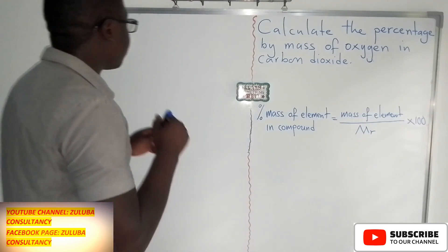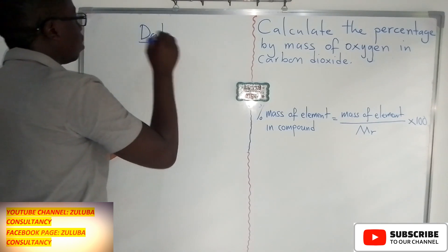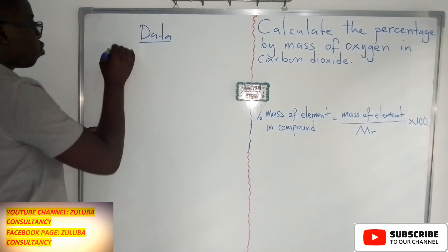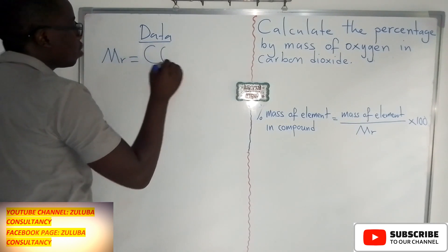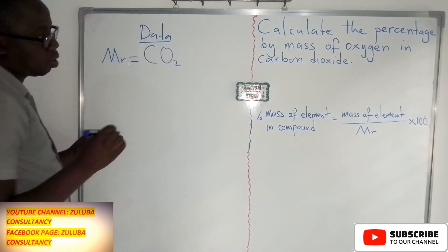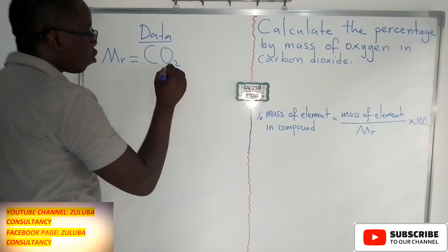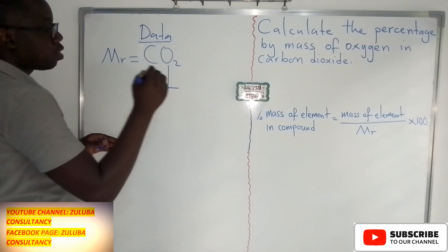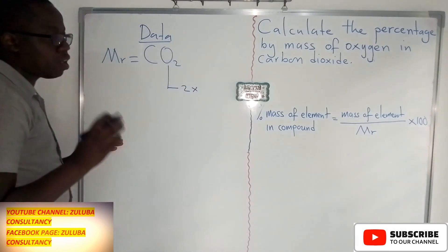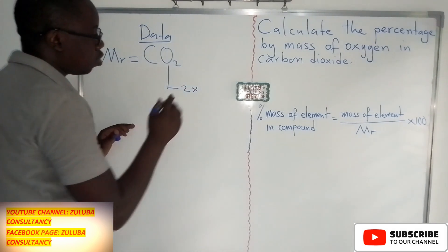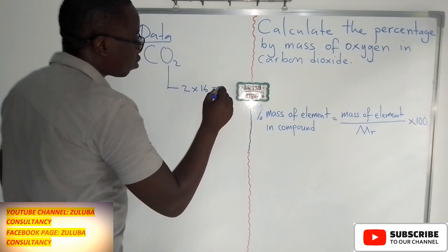Let's start with the Mr of the compound. The compound in question is carbon dioxide. We have two atoms of oxygen, multiplied by the relative atomic mass of oxygen, which is 16, giving us 32.